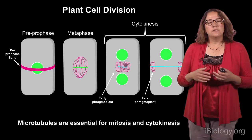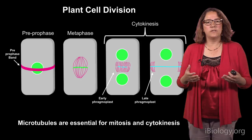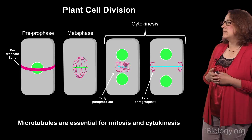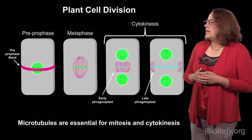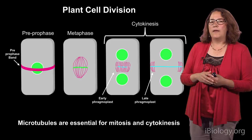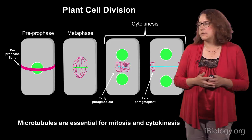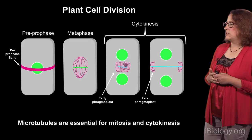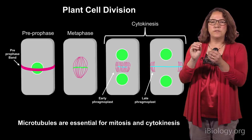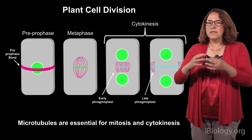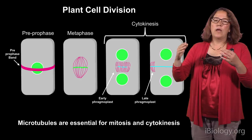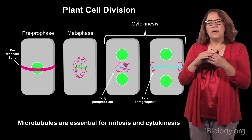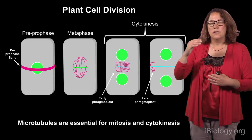As mitosis proceeds and the nuclear envelope falls apart, the microtubules in the preprophase band disassemble and they become part of the mitotic spindle. This is a spindle in metaphase, where the chromosomes are all aligned along the metaphase plate. Then anaphase occurs and the chromosomes move to the two poles, and those microtubules get repurposed into a structure called the phragmoplast. The phragmoplast is a beautiful structure made of microtubules that helps to move vesicles to the position in the middle. Those vesicles are full of cell wall material — they fuse together, make a lipid bilayer, and inside is new cell wall material, templating a new cell plate that will separate the two daughter cells.